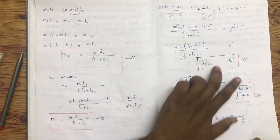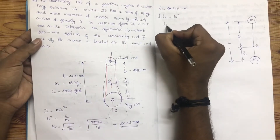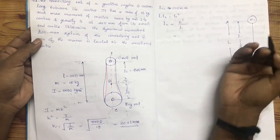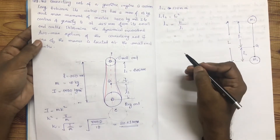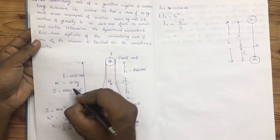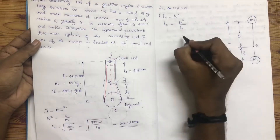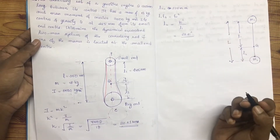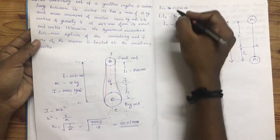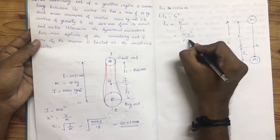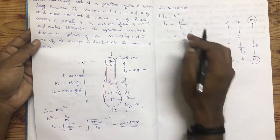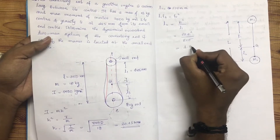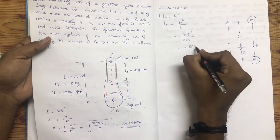Now we have three equations. L2 is equal to k² divided by L1. What is k²? k² is equal to 20.41. What is L1? L1 is equal to 2.2 — and it is not millimetres.